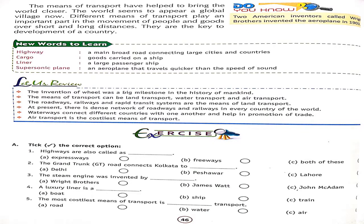Means of transport have helped connect our world. Different means of transport play an important role — for people to travel or for goods to be transported over short or long distances. They are the key to the development of a country so that our nation can progress better. Now you have new words which you have to write in your copies.